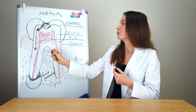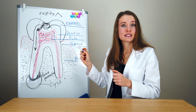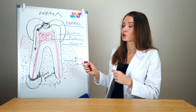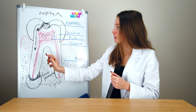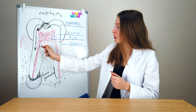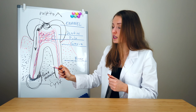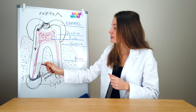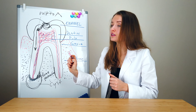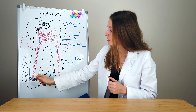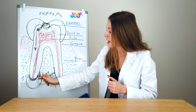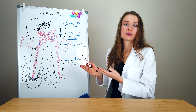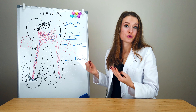This carious process can be just in the enamel, or it can be in the enamel and dentin. The most important point we have to know is whether the pulp is involved in this process or not. If the pulp is involved in the inflammation, it is going to result in pulpitis.